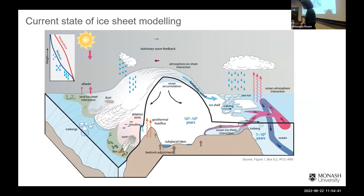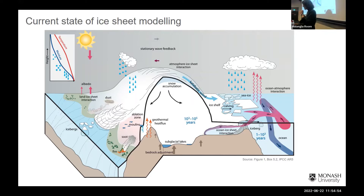One of the big challenges in ice sheet models is that even though we're looking at thousands of kilometres of ice mass and how it's moving and changing, it actually responds at the crystal scale to changes in stress. But it's not going to be feasible to model the evolution of single crystals if we want to look at what's going to happen to the end of the 21st century.